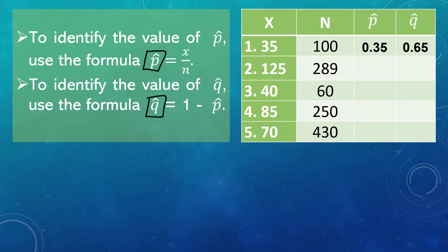How do we get 0.65? Since our P-hat is 0.35, Q-hat is equal to 1 minus P-hat. So, 1 minus 0.35 gives us Q-hat equal to 0.65.